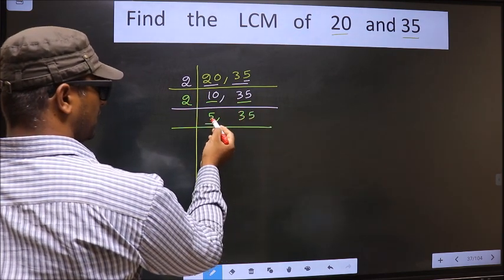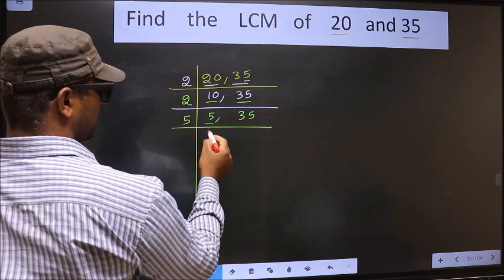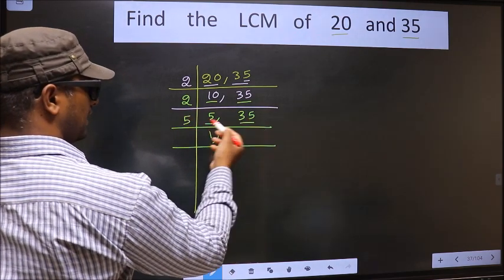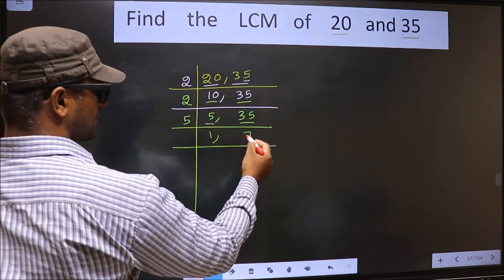We have 5 here. 5 is a prime number, so 5 divided by 5 gives 1. The other number 35. When do we get 35 in 5 table? 5 times 7 equals 35.